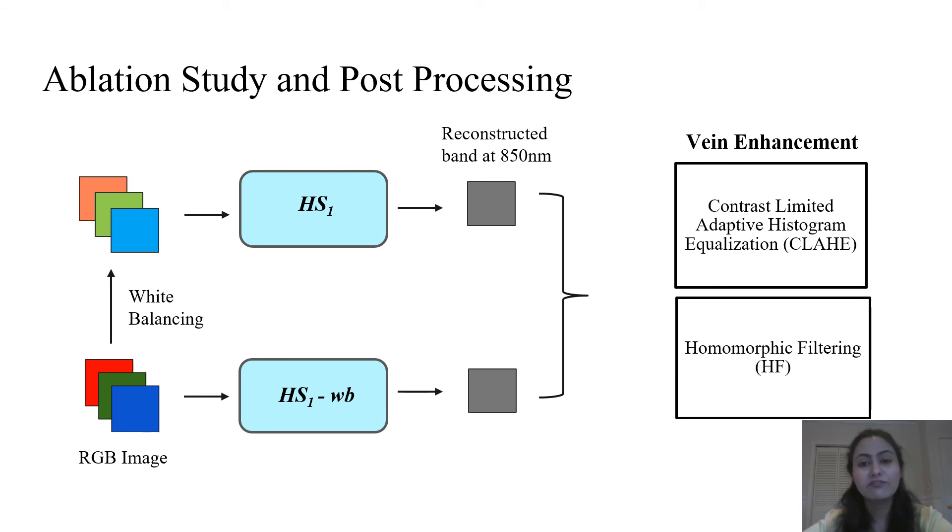After we construct the dataset, we train our model using two approaches, with and without white balancing. We refer to the first as HS1 where the subscript indicates that we are reconstructing one hyperspectral band. We refer to the second model as HS1-WB where minus indicates without white balancing. Both the models are trained to reconstruct a band at 850nm in infrared range. After reconstruction, we post-process the produced image to improve vein visualization. Specifically, we perform image enhancement to produce better contrast between superficial veins and human skin. We use two image enhancement techniques. First is contrast limited adaptive histogram equalization which is an improvement over the standard histogram equalization method. Second is homomorphic filtering which enhances images by increasing the high frequency component and decreasing the low frequency component in an image.